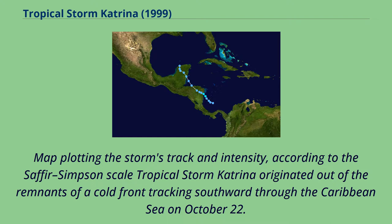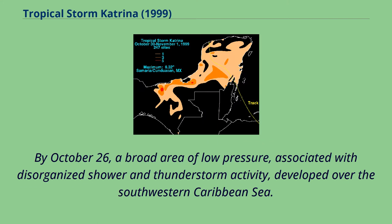Map plotting the storm's track and intensity according to the Saffir-Simpson Scale. Tropical Storm Katrina originated out of the remnants of a cold front tracking southward through the Caribbean Sea on October 22. By October 26, a broad area of low pressure associated with disorganized shower and thunderstorm activity developed over the southwestern Caribbean Sea.